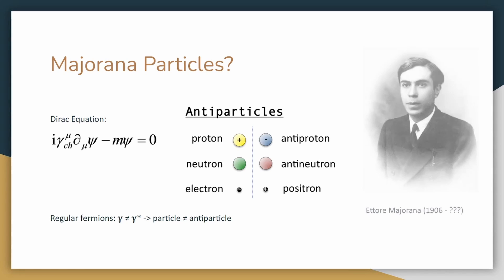However, Ettore Majorana proposed an alternative solution to the Dirac equation where the solution is real and hence the conjugate is itself. The implication is that the corresponding solution particle is also its own antiparticle.